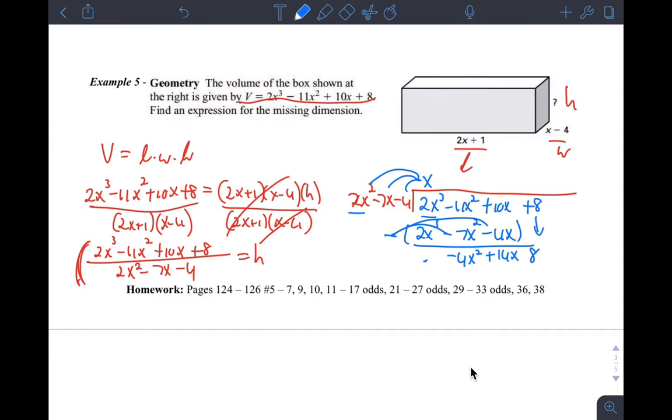And do the division again. Negative 4x squared divided by 2x squared, that actually just becomes minus 2. And so you just multiply everything again from this side. So negative 2 times 2x squared is negative 4x squared. Negative 2 times negative 7 is plus 14x. And then negative 2 times negative 4 is positive 8.